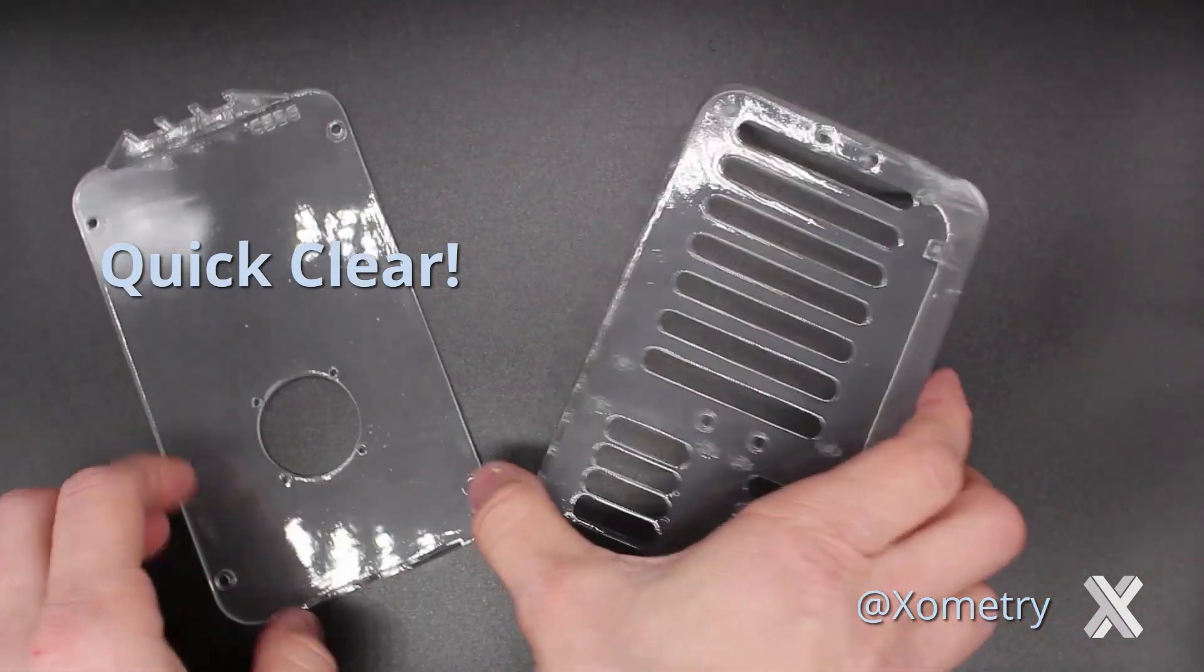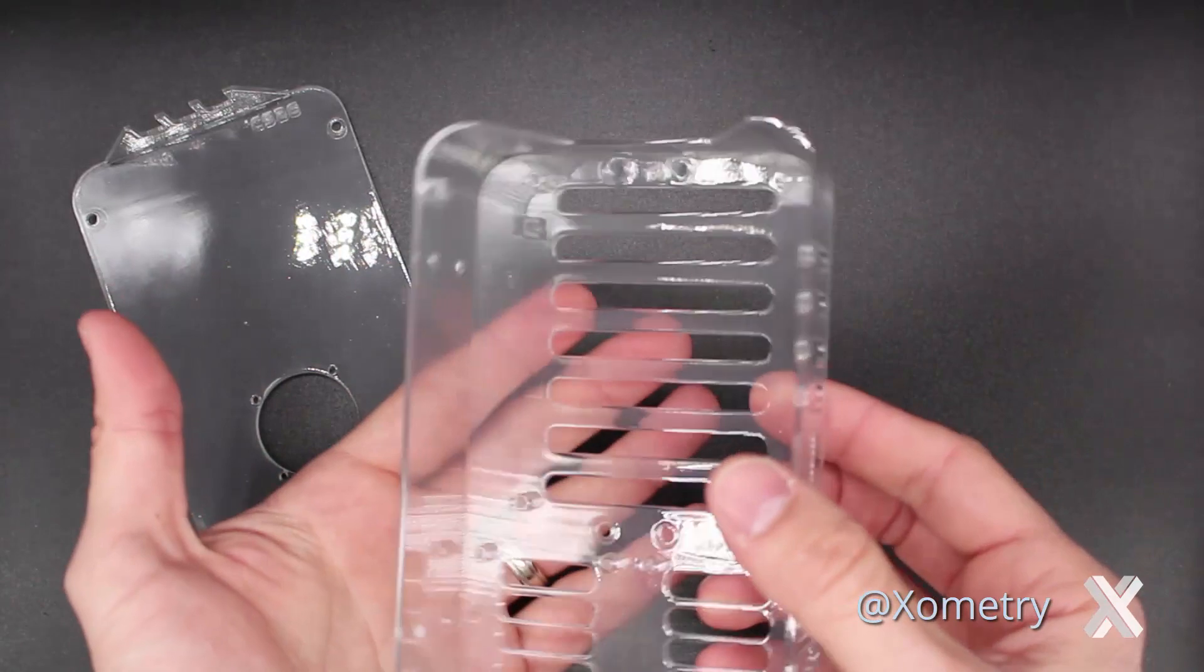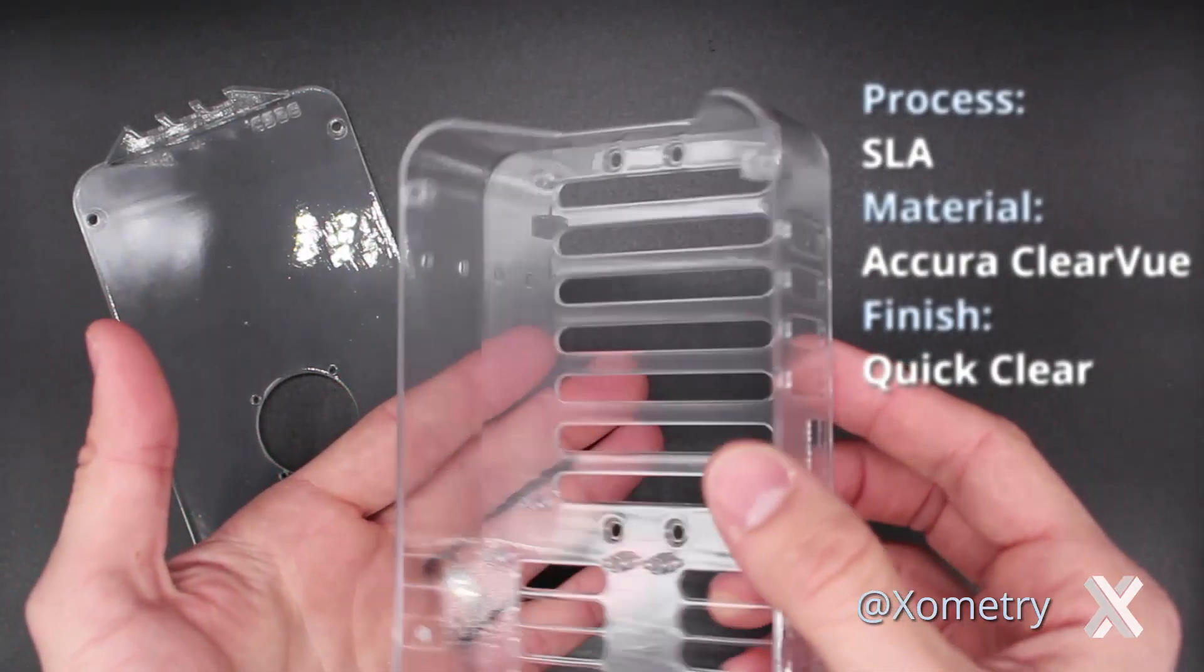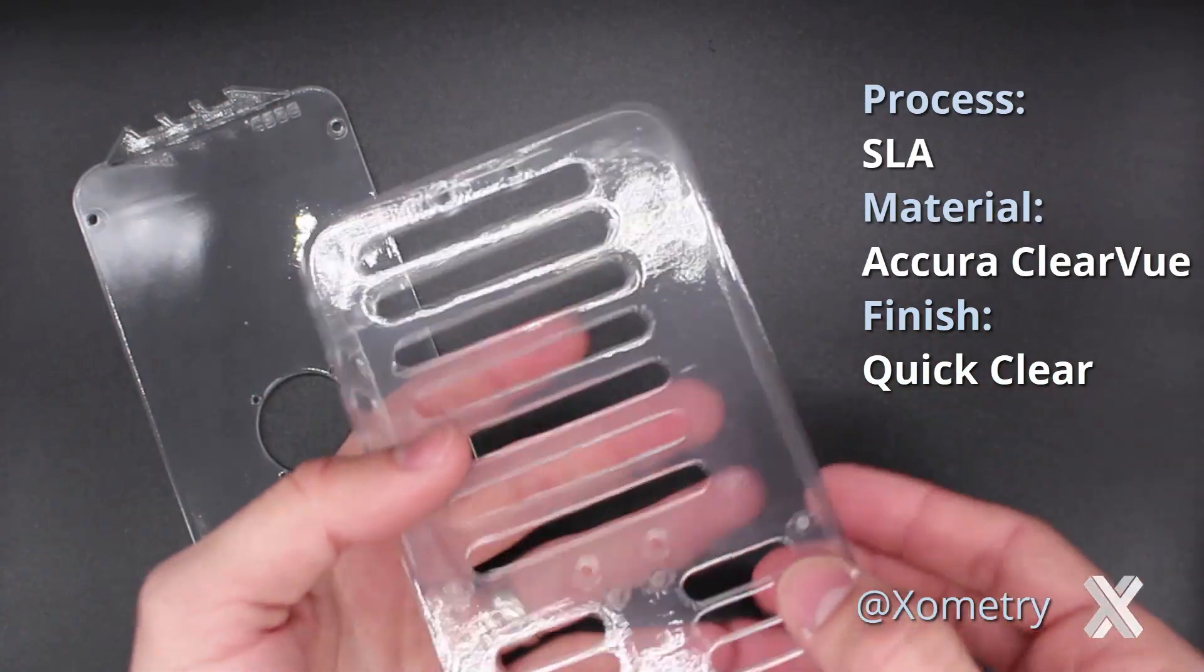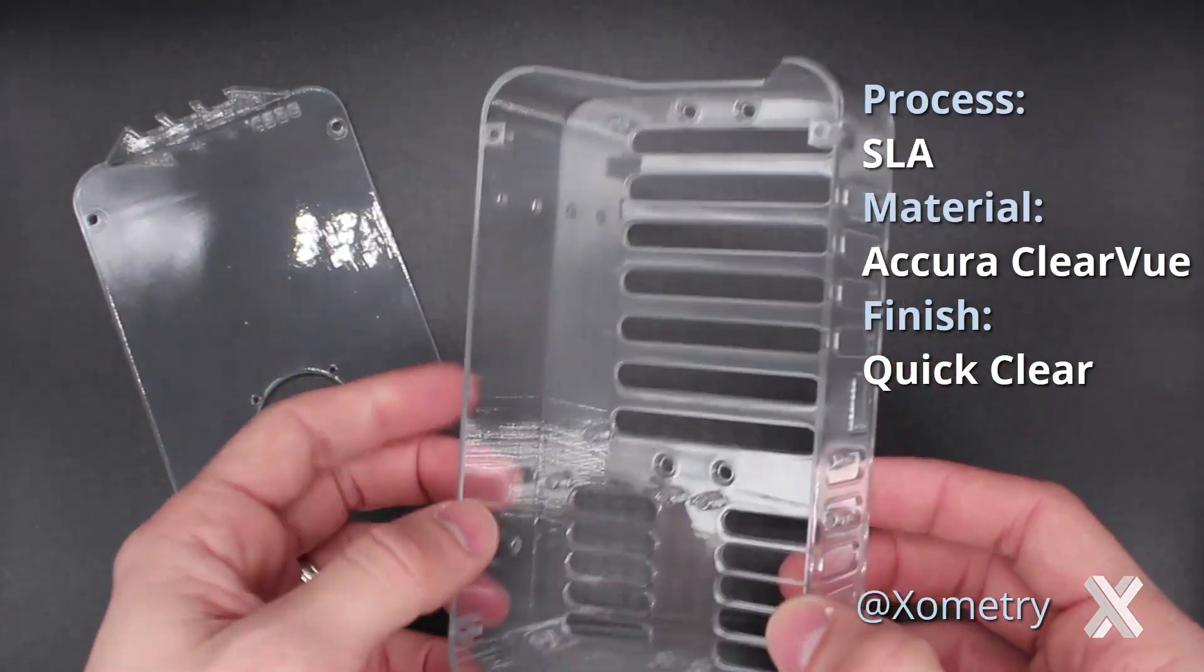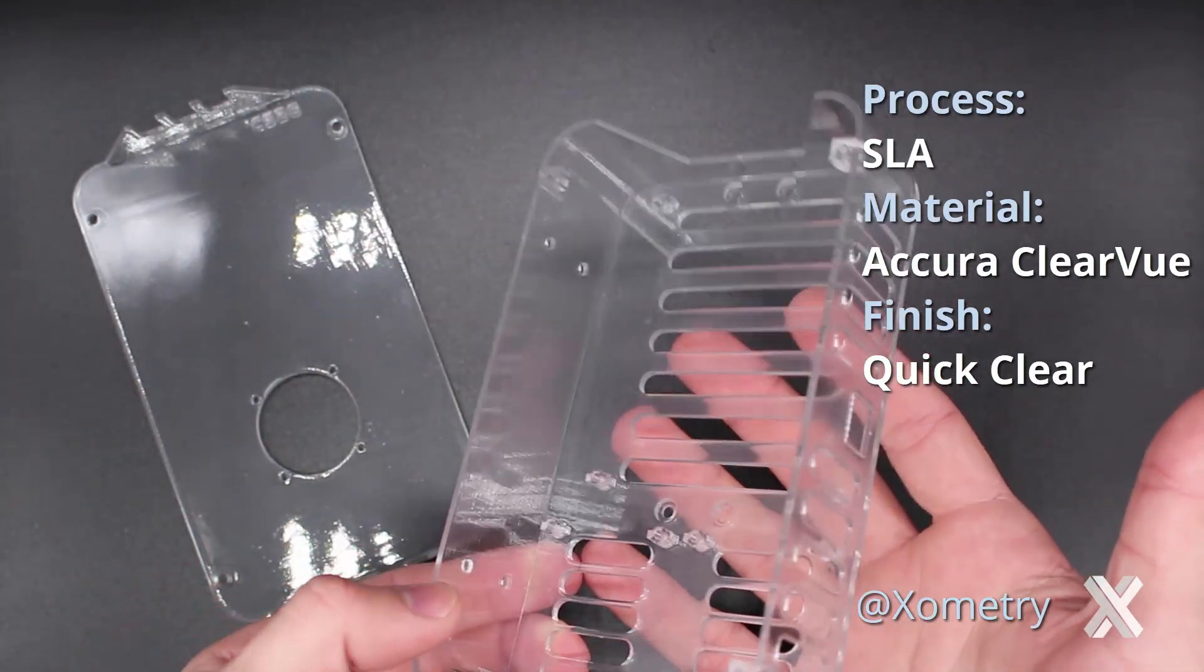So quick clear is a way of finishing a part where after you 3D print it in a clear material, in this case, this is Acura Clearview, a SLA material, we actually will post process it by doing a clear coat. So a paint clear coat on this.